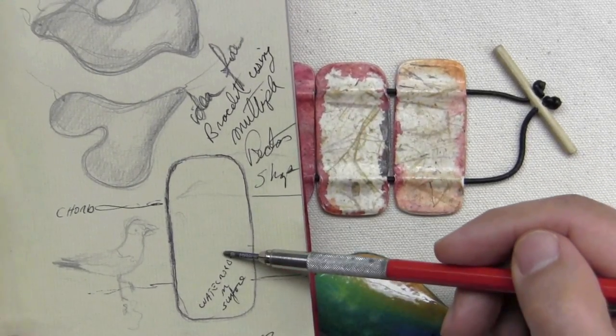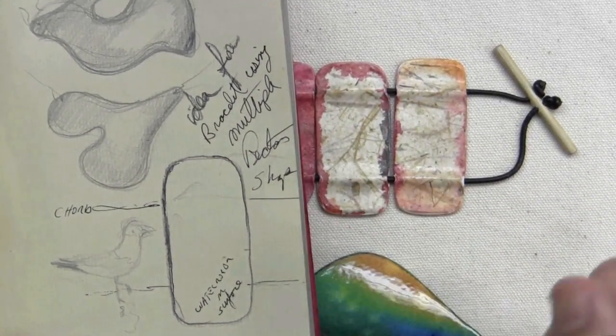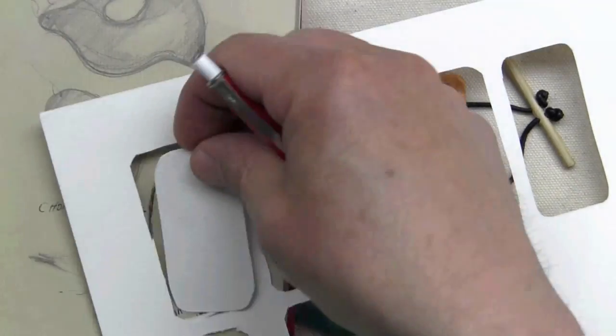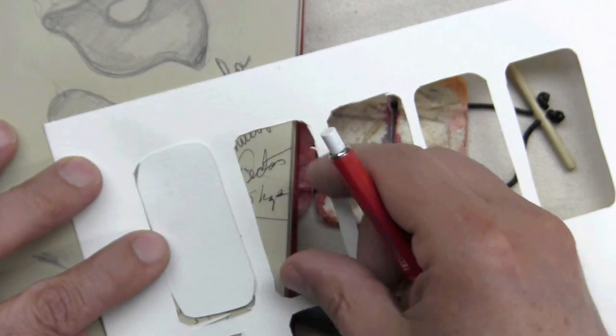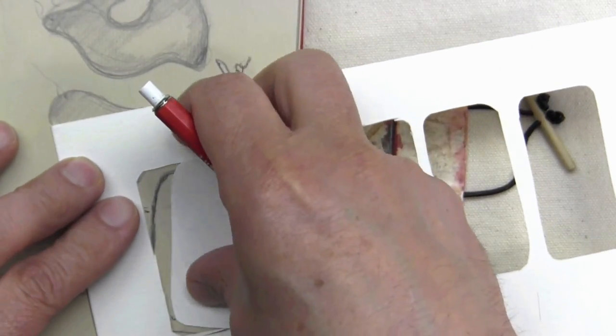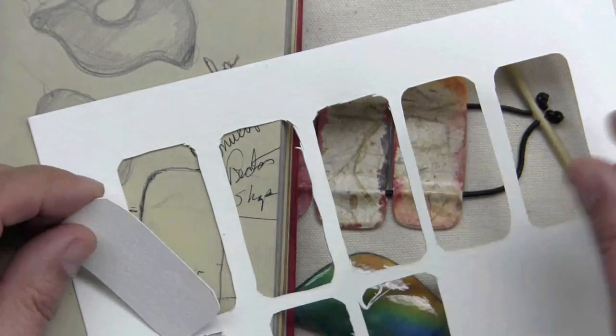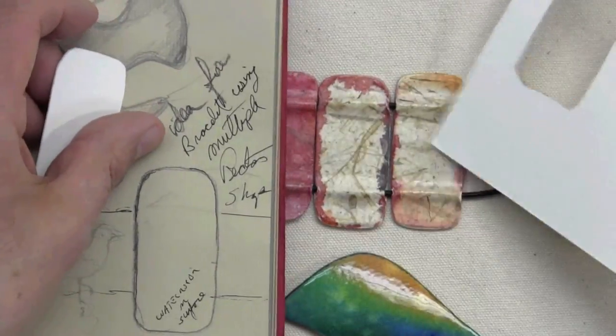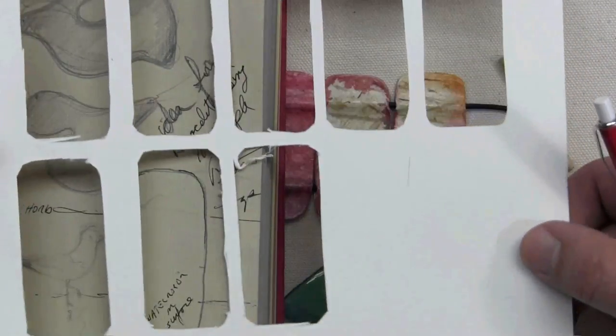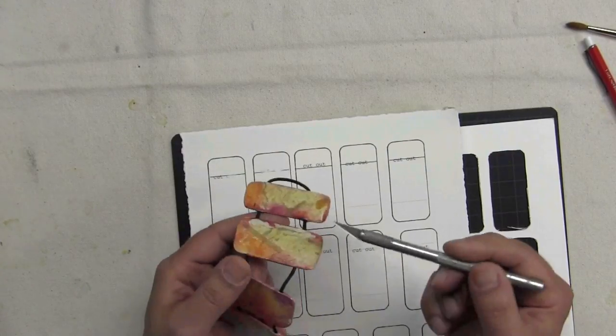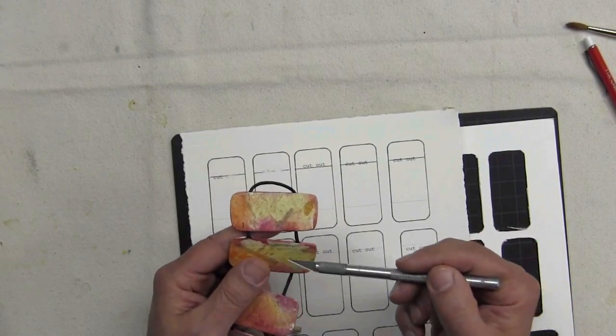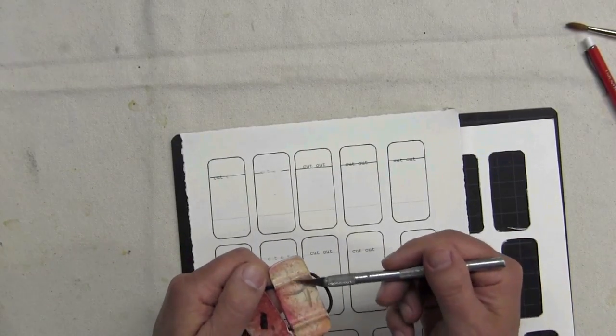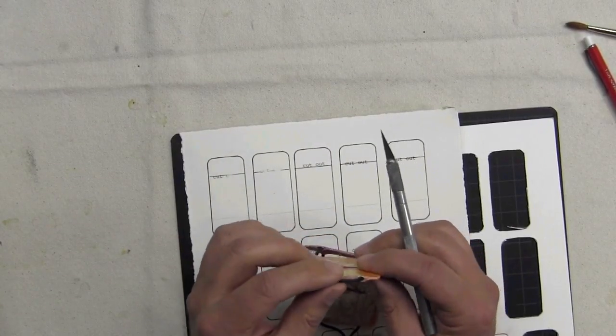For the next step what I did is I redrew this shape on my watercolor paper and then I proceeded to cut out the individual shapes. And you have a lot of cutting to do. As you can see here, this is the paper I used to build this necklace right over here.